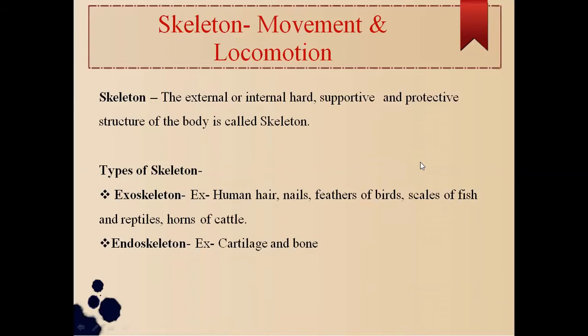'Endo' means internal, so the internal hard supportive and protective structure of the body is called endoskeleton. Examples include cartilage and bones.